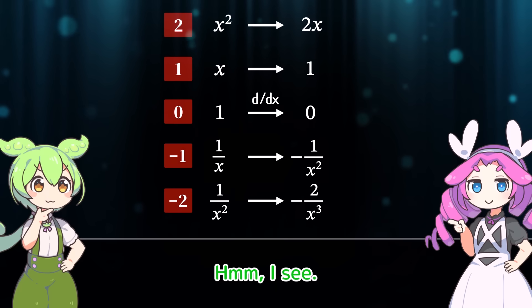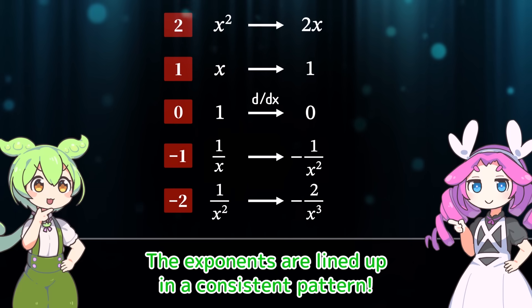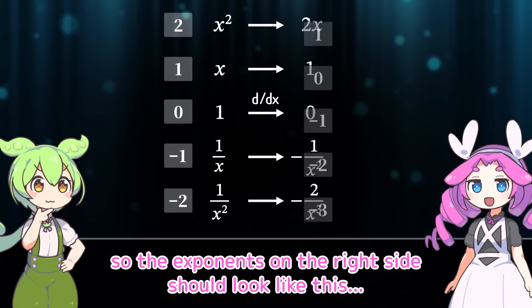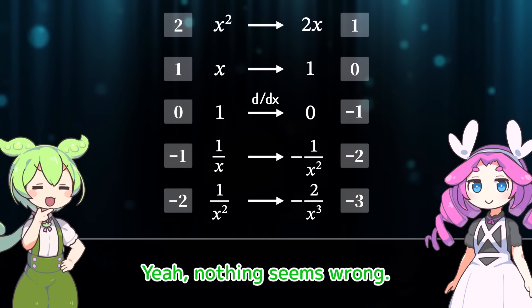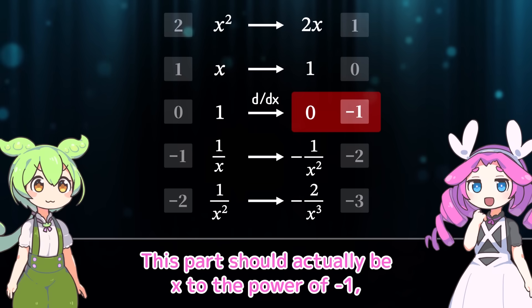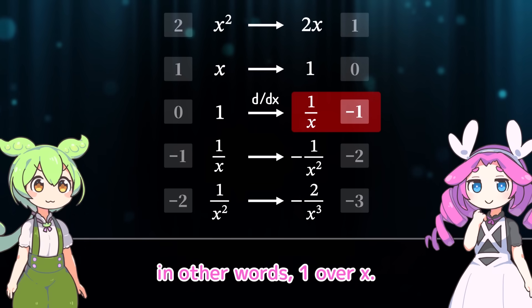Hmm, I see. The exponents are lined up in a consistent pattern. And when differentiating powers of x, the exponent decreases by 1. So the exponents on the right side should look like this. Yeah, nothing seems wrong. No, look closely here. This part should actually be x to the power of negative 1. In other words, 1 over x. Huh?